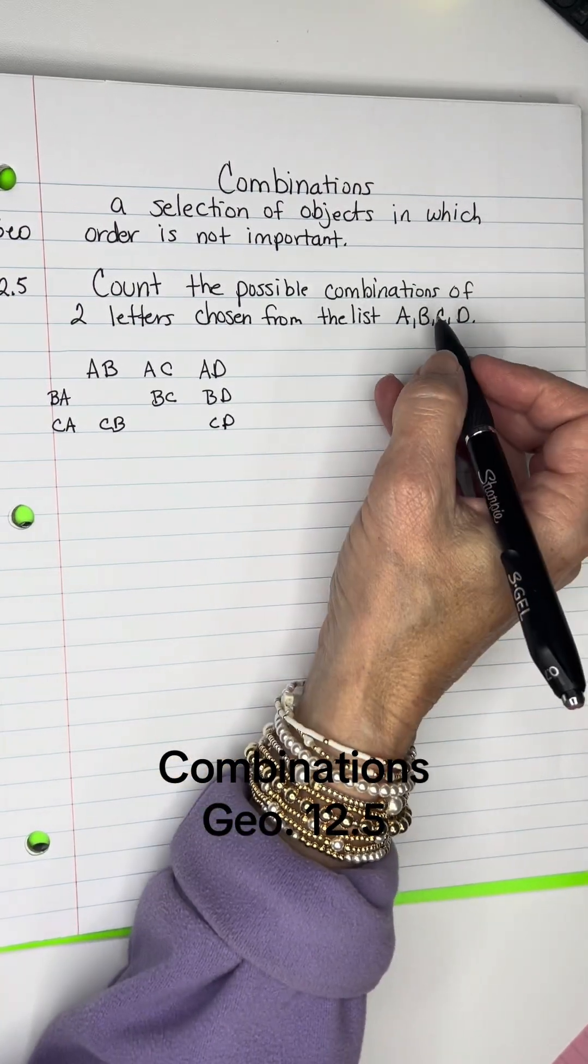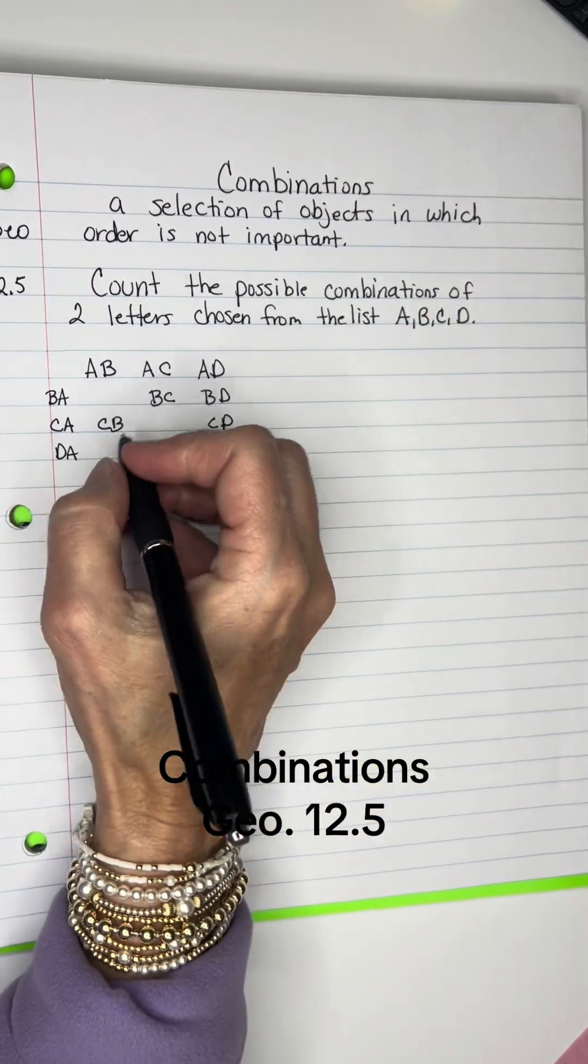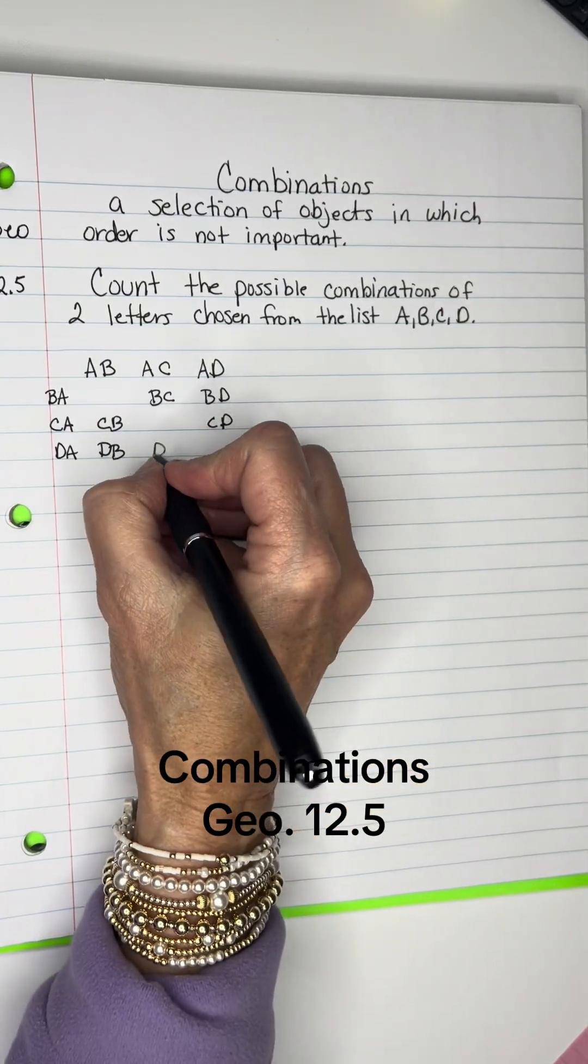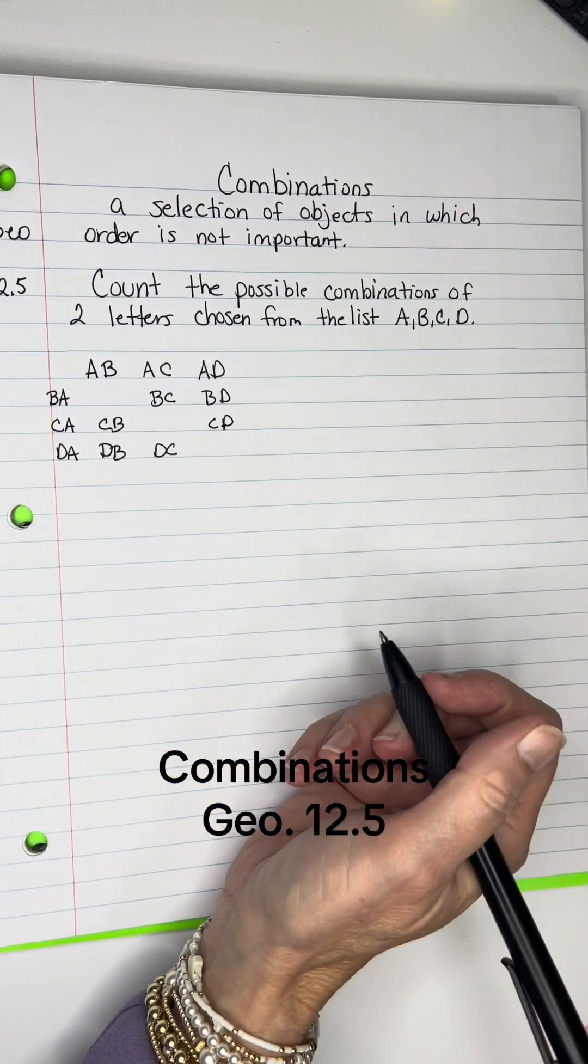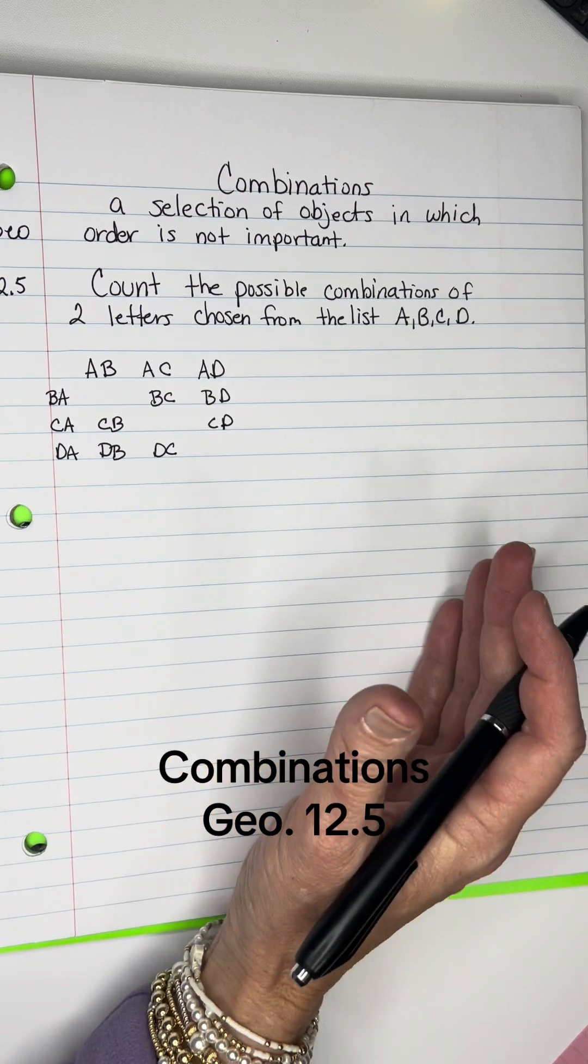And then I could get D with A. So here are the possibilities. Now let's see, what are the same ones?